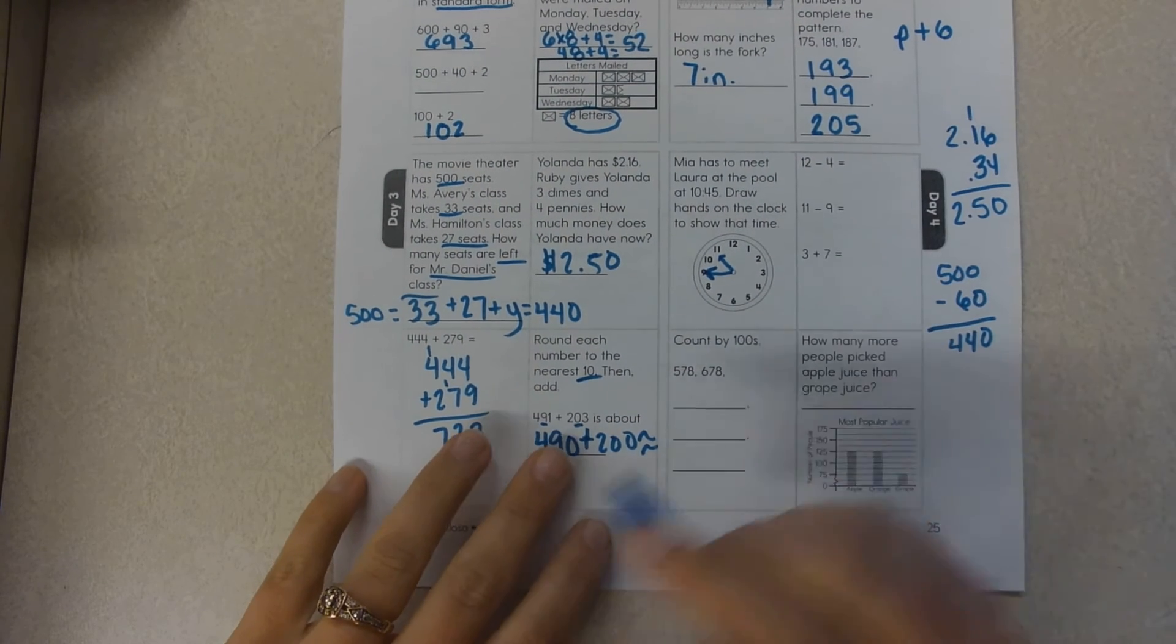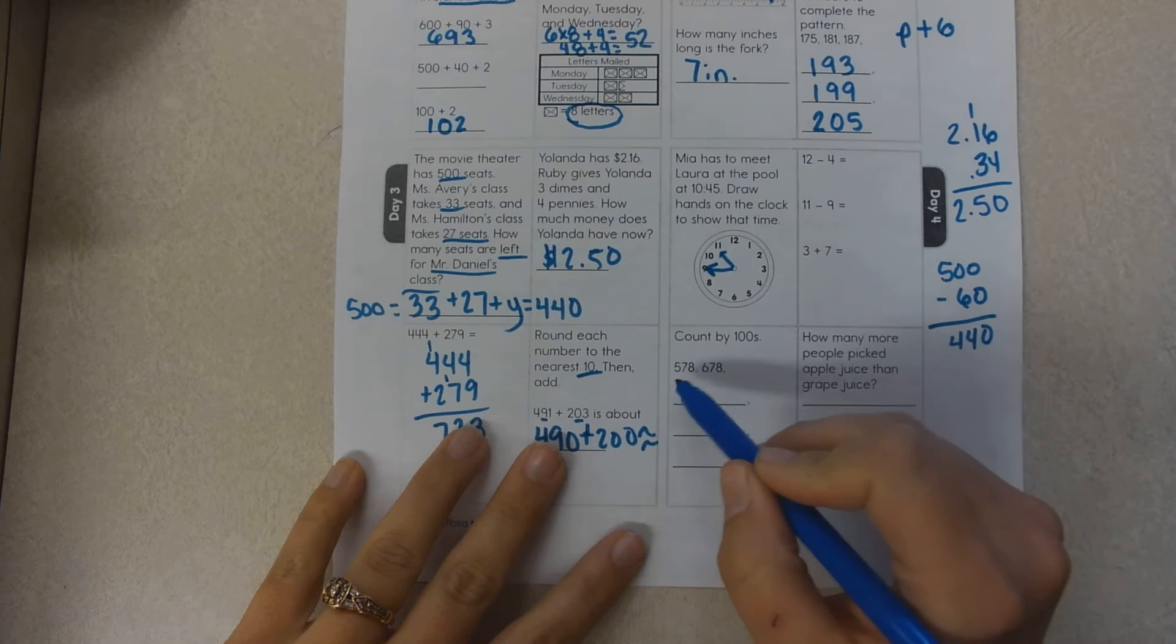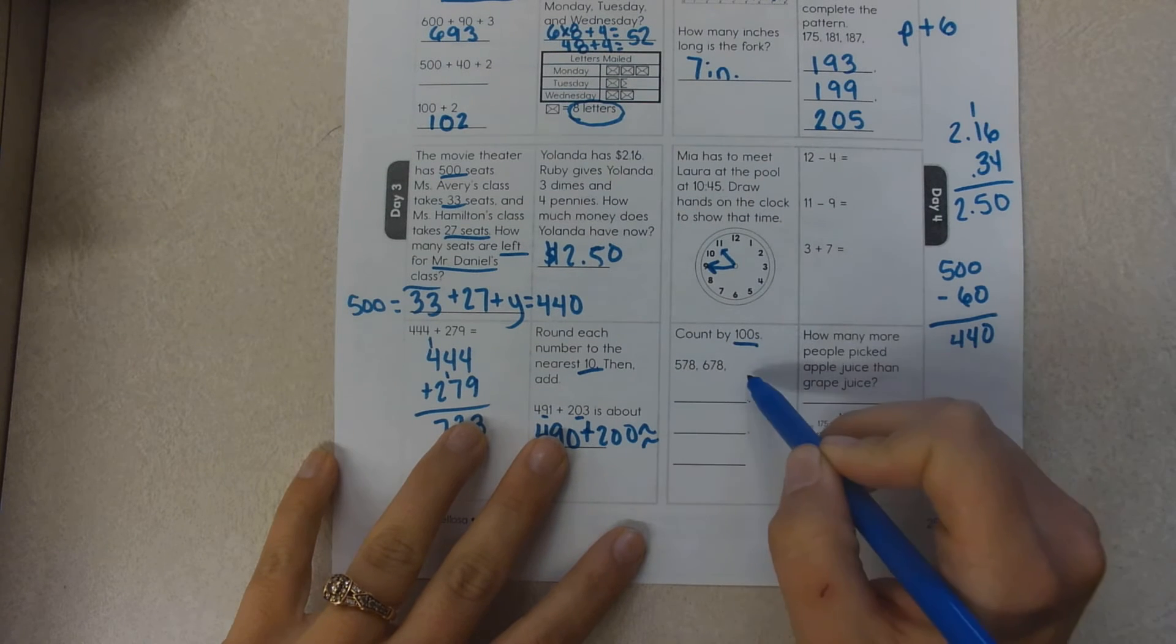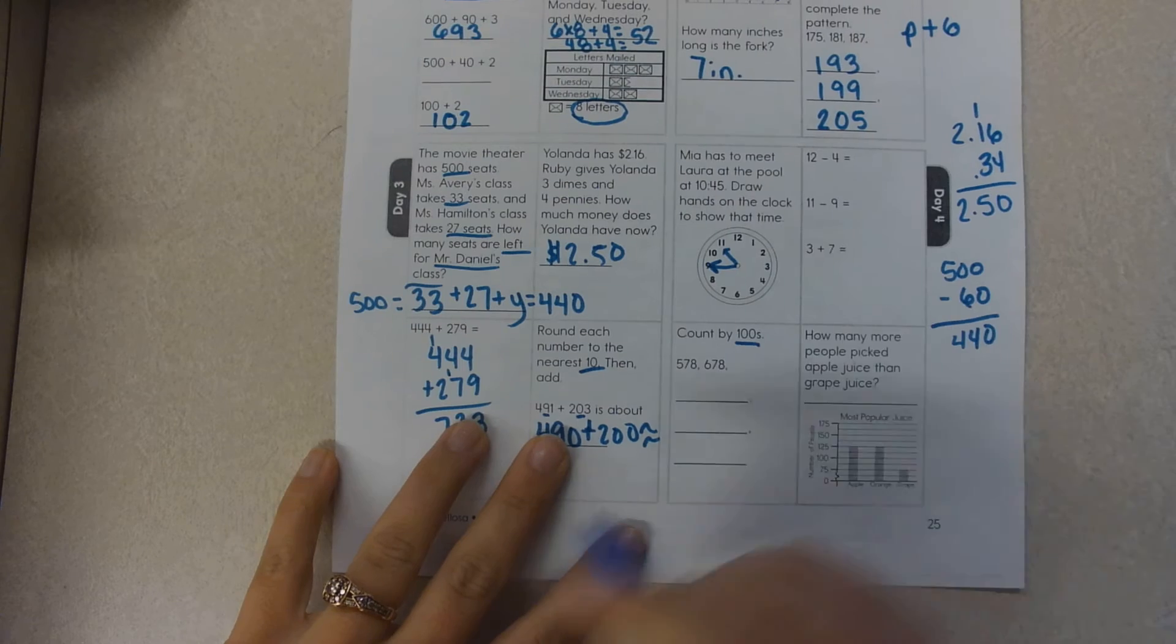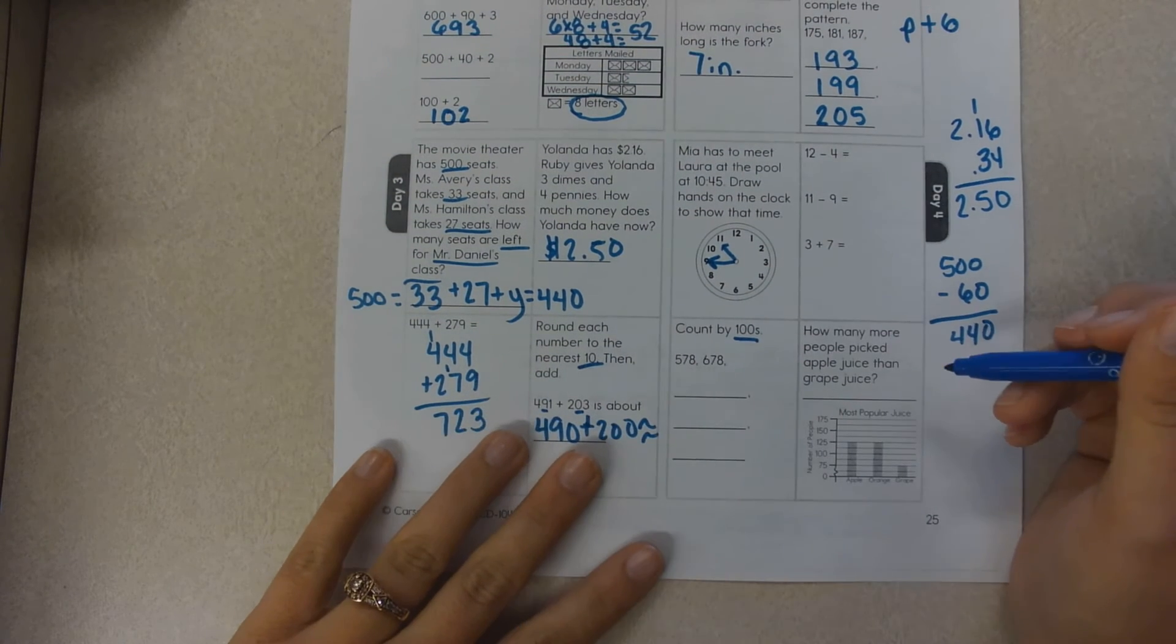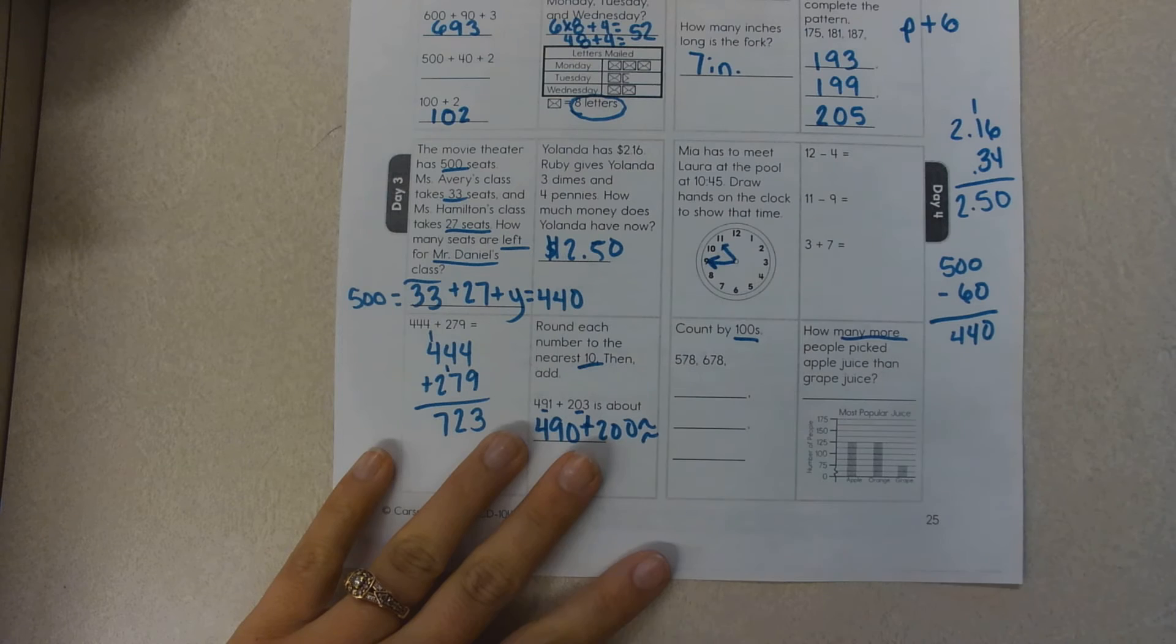These are all mental, so I'm not going to help you with this. You are just changing the hundreds place by one: 500, 600, 700, 800, and 900, and then the ones and tens stay the same. How many more people